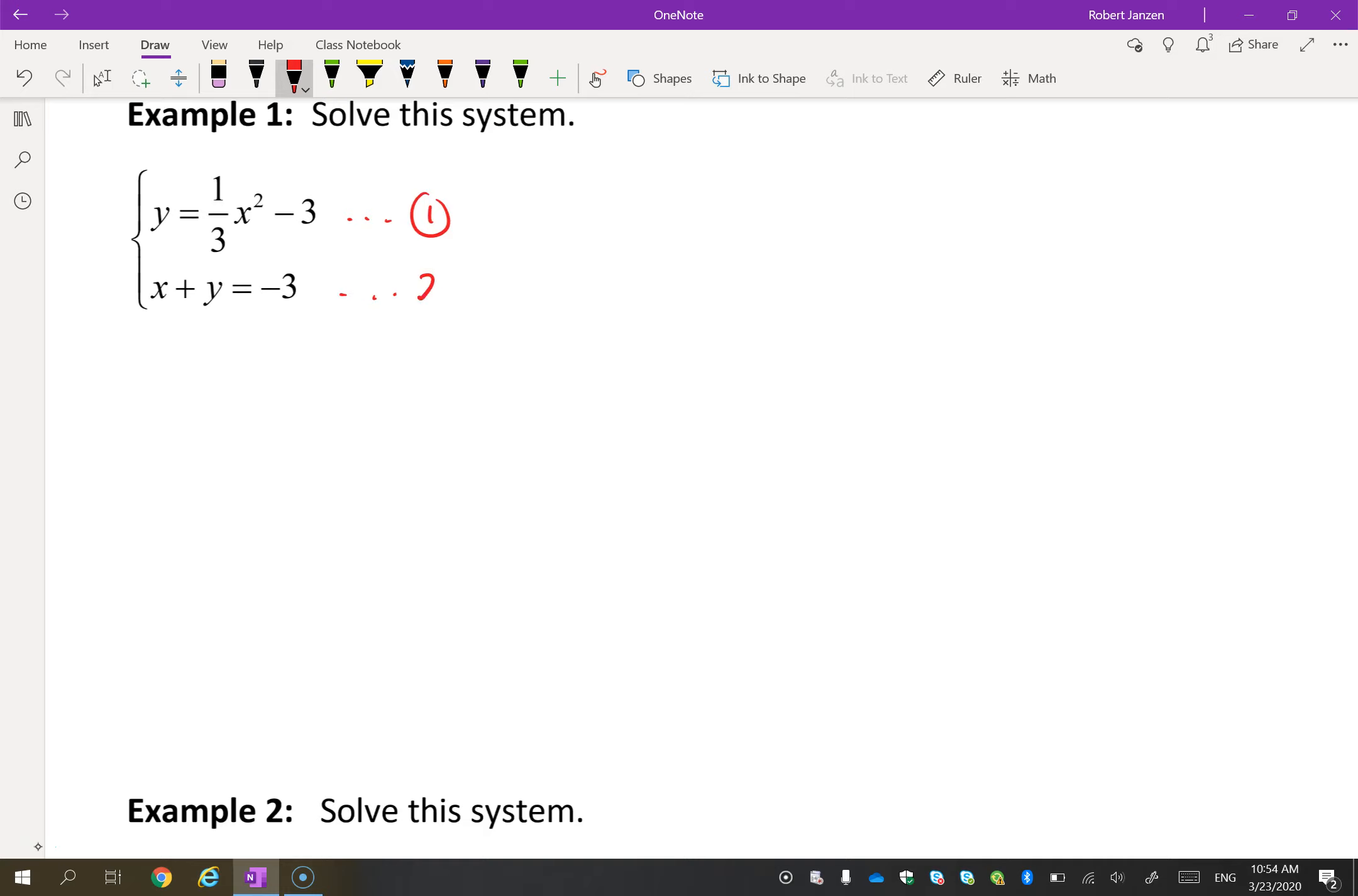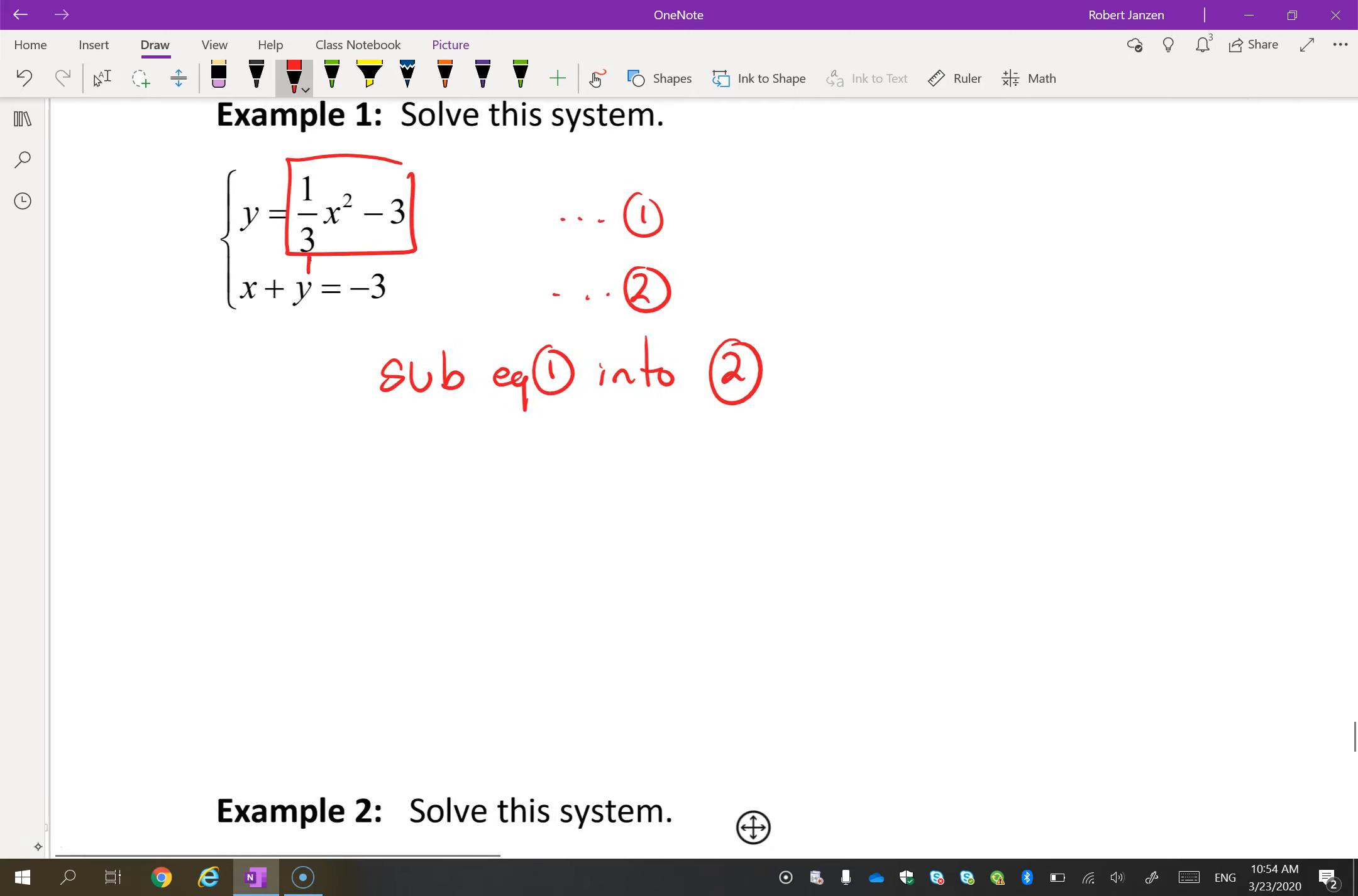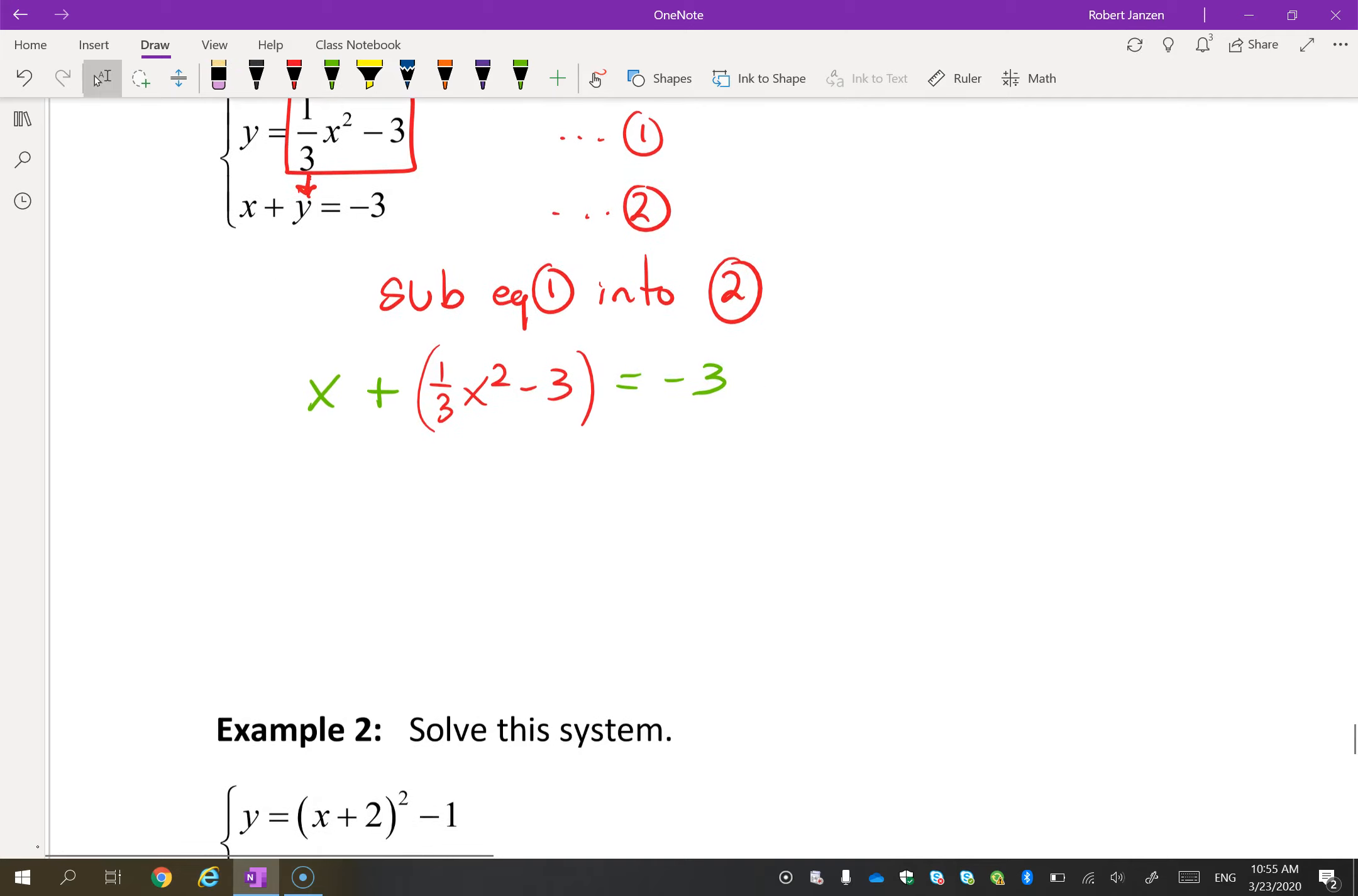Here's equation one. Here's equation two. Let's sub equation one into two. So we're going to take the value for y in equation one and put it into equation two. So x + what is the value of y? One third x² minus 3. And we've just put that in for y. This is an equality with one variable, just x. So let's take a look at it. We'll rearrange it a little bit, I think.